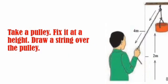Let's try this. Take a pulley, fix it at a height, draw a string over the pulley, tie a load of 2 kilograms at one end, hold the other end of the string and pull it downwards to lift the load, first up to the height of 1 meter and then up to the height of 4 meters. When is more work done?